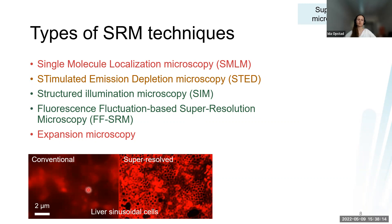This is an example where in the conventional image, you are not able to look at these tiny holes in liver cells filtering the blood. But with the SIM image, you are able to resolve the invisible structures.